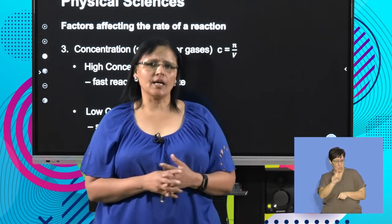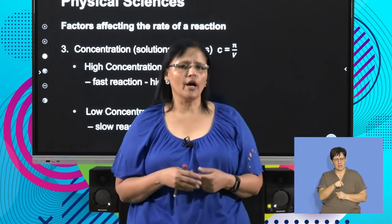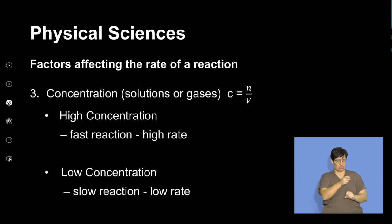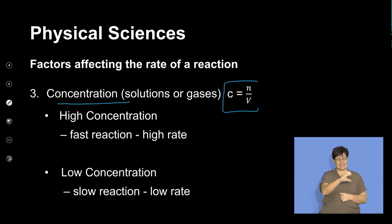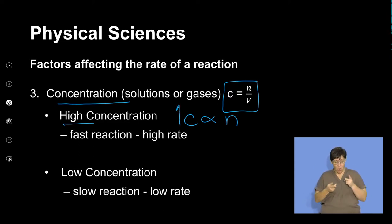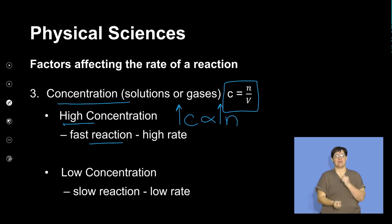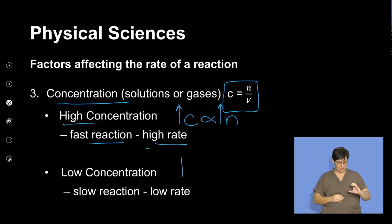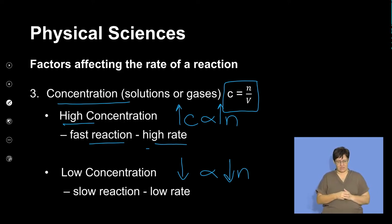Another factor is concentration. Concentration is the number of moles per volume. If there is a high concentration, because concentration is directly proportional to the number of moles, a high concentration will have a high number of moles, giving a fast reaction with a high rate in a small time. Low concentration means a low number of moles, resulting in a slow reaction that happens over a longer time.